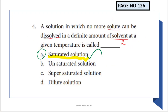A solution in which no more solute can be dissolved in a definite amount of solvent at a given temperature is called a saturated solution. A solution has two components - solute and solvent. When no more solute can be dissolved, the solution has reached its saturation point.